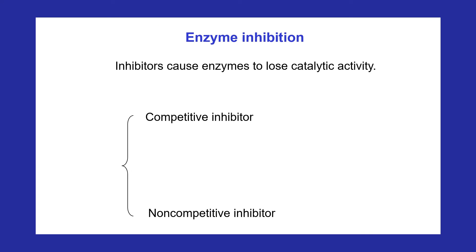Many kinds of molecules called inhibitors cause enzymes to lose catalytic activity. Although inhibitors act differently, they all prevent the active site of an enzyme from binding with a substrate. Inhibition can be competitive or non-competitive.